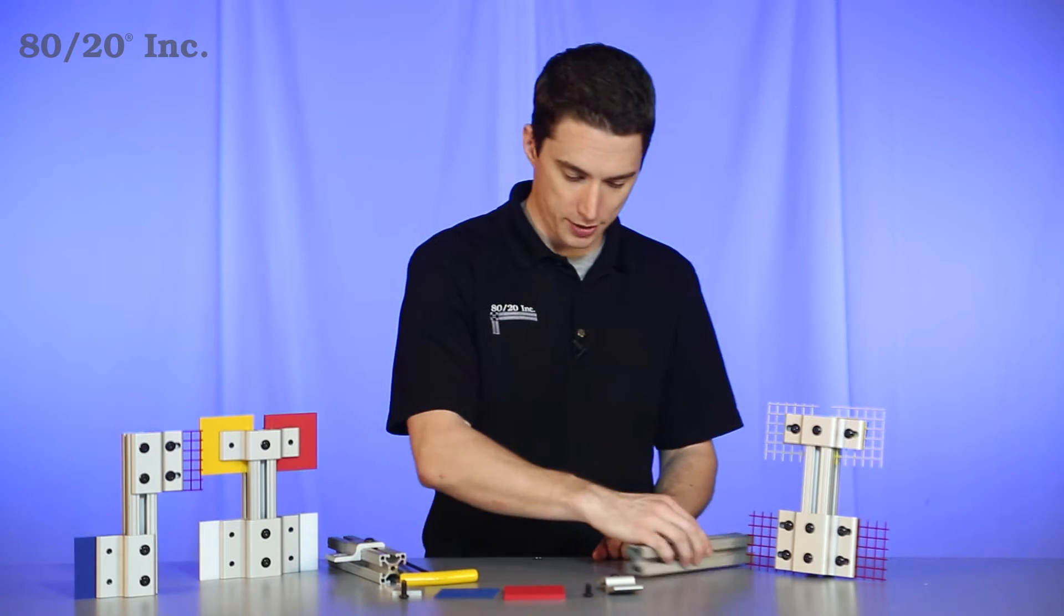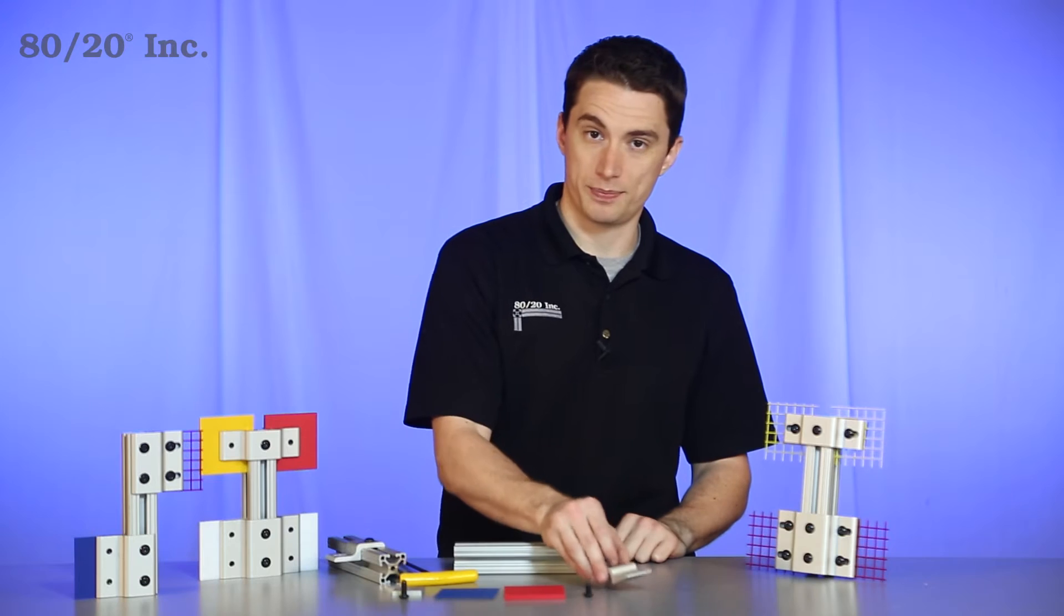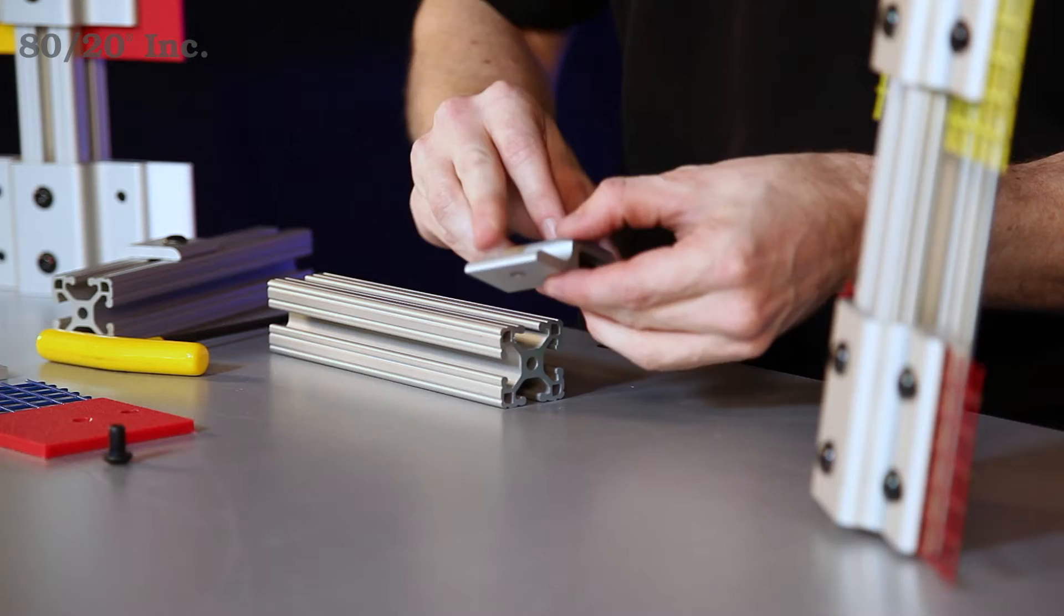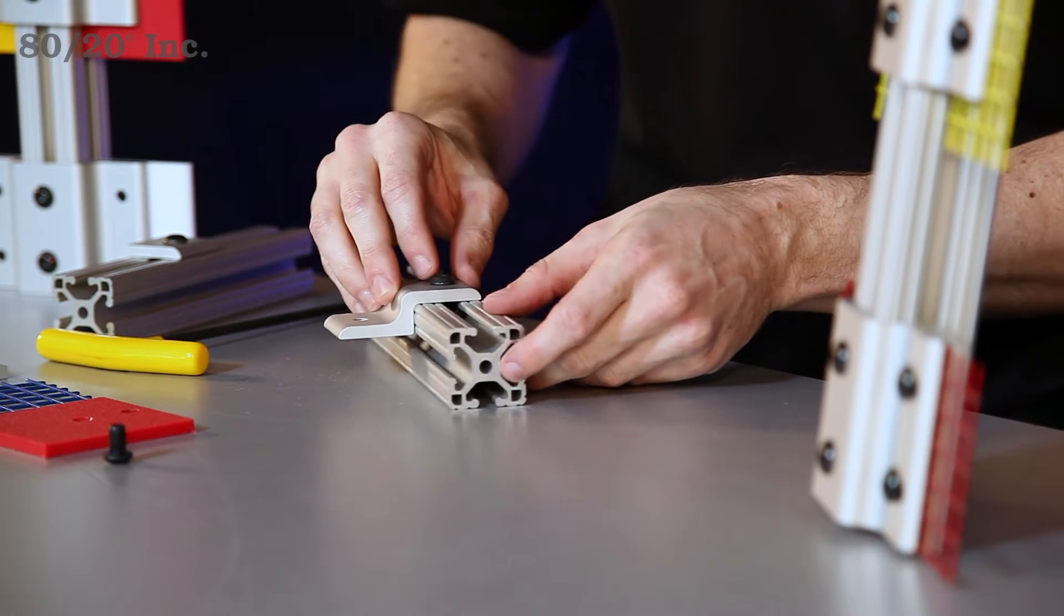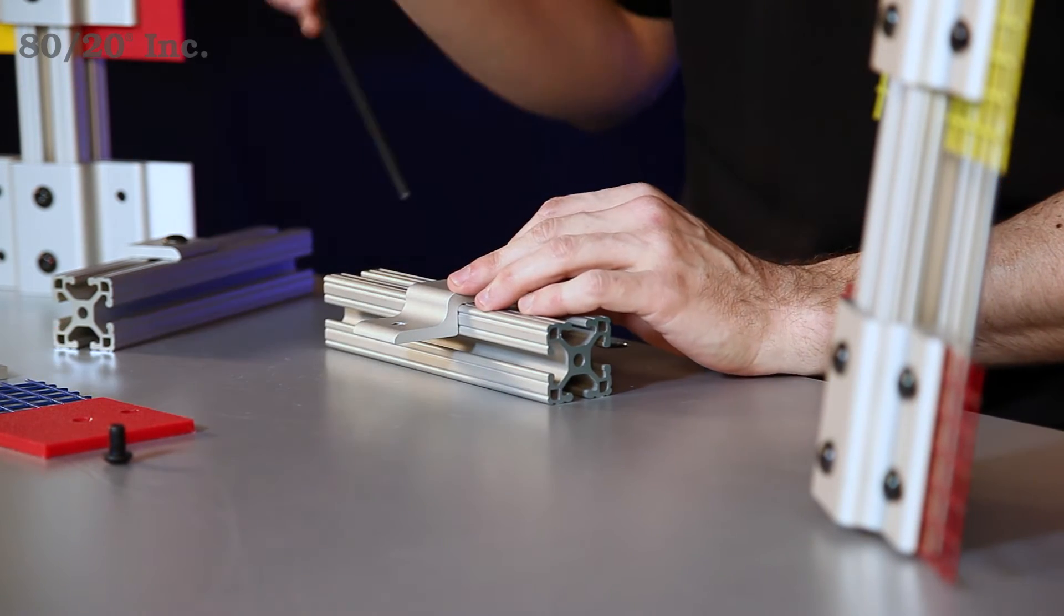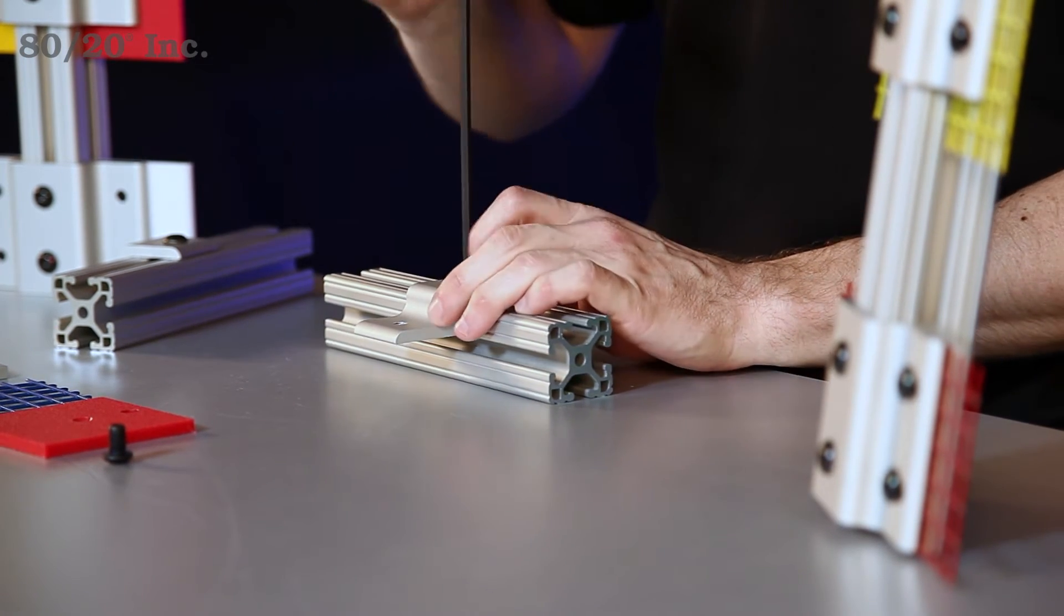Now when it comes to installing the panel retainer, you'll take your retainer with the preloaded T-nut and bolt on it and slide it right into the open T-slot. You'll find your location, tighten that down and secure it.